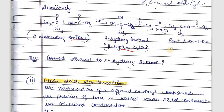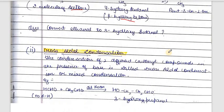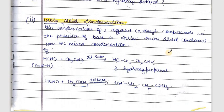A common conversion question is to convert ethanol to 3-hydroxy butanal, which can be solved using the aldol condensation reaction. Next is cross aldol condensation. In cross aldol condensation, the two molecules are different — they are not the same as in simple aldol condensation. In aldol condensation we use two identical aldehydes or ketones, whereas in cross aldol condensation we use different types of carbonyl compounds.